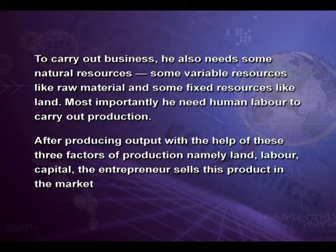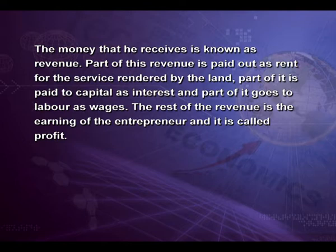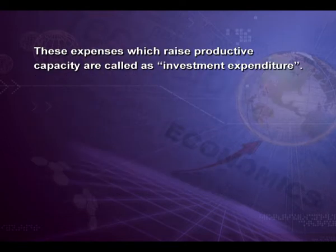After producing output with the help of these three factors of production — land, labor, and capital — the entrepreneur sells the production in the market. The money he receives is known as his revenue. Part of this revenue is paid as rent for services rendered by land, part is paid to capital as interest, and part goes to labor as wages. The rest of the revenue after paying rent, interest, and wages is the earning of the entrepreneur, called his profit. These profits are used in the next period to buy new machinery and build new factories to expand production — these expenses which raise productive capacity are called investment expenditure.